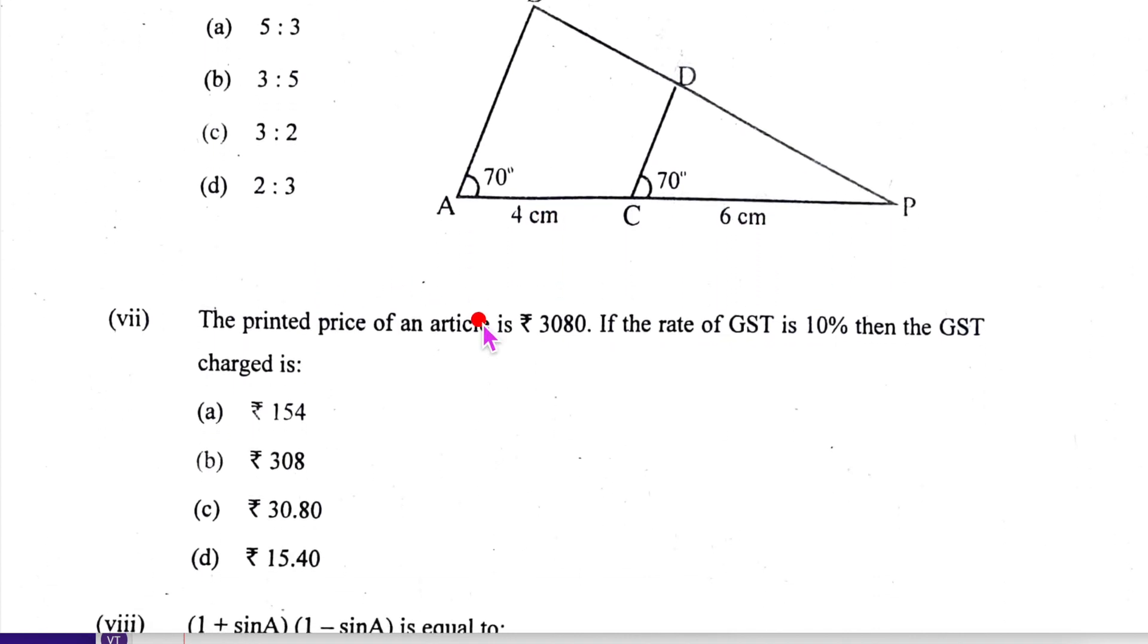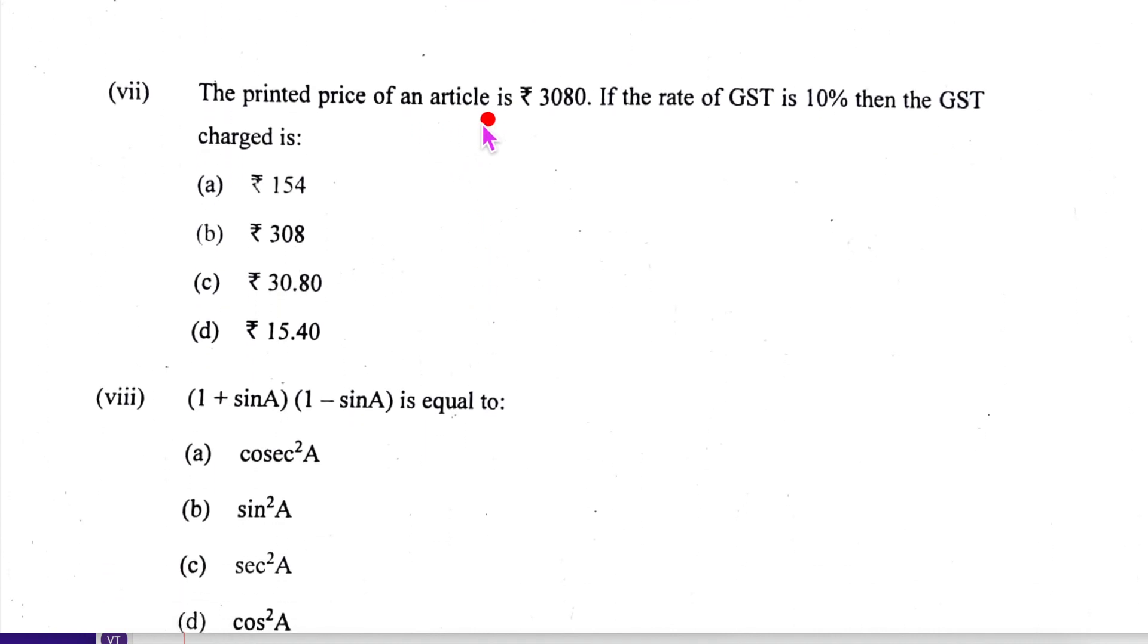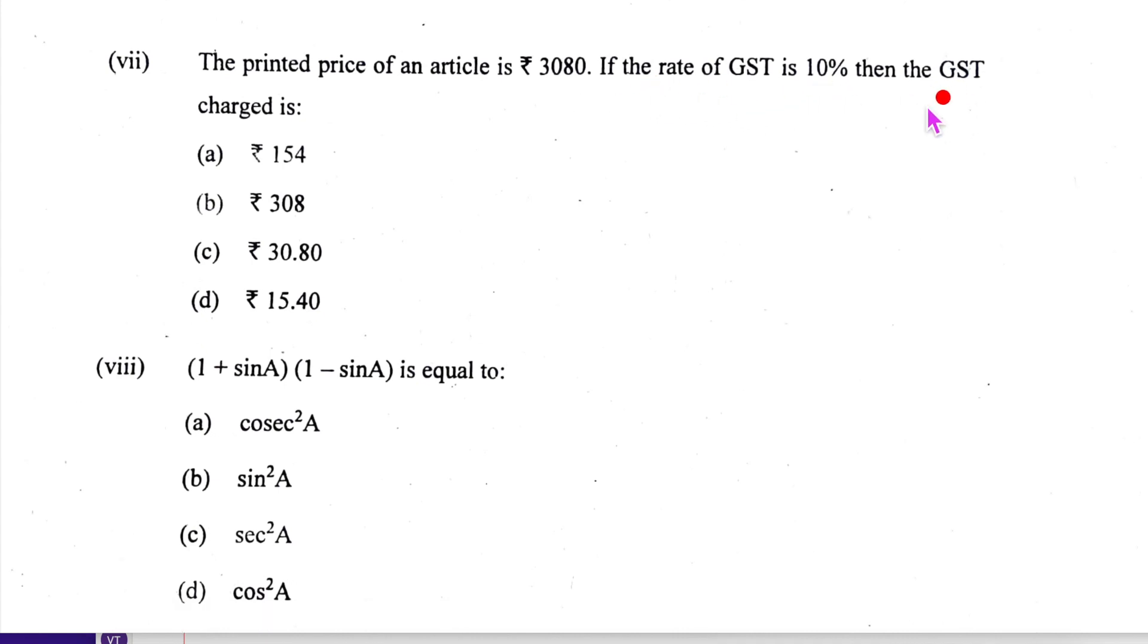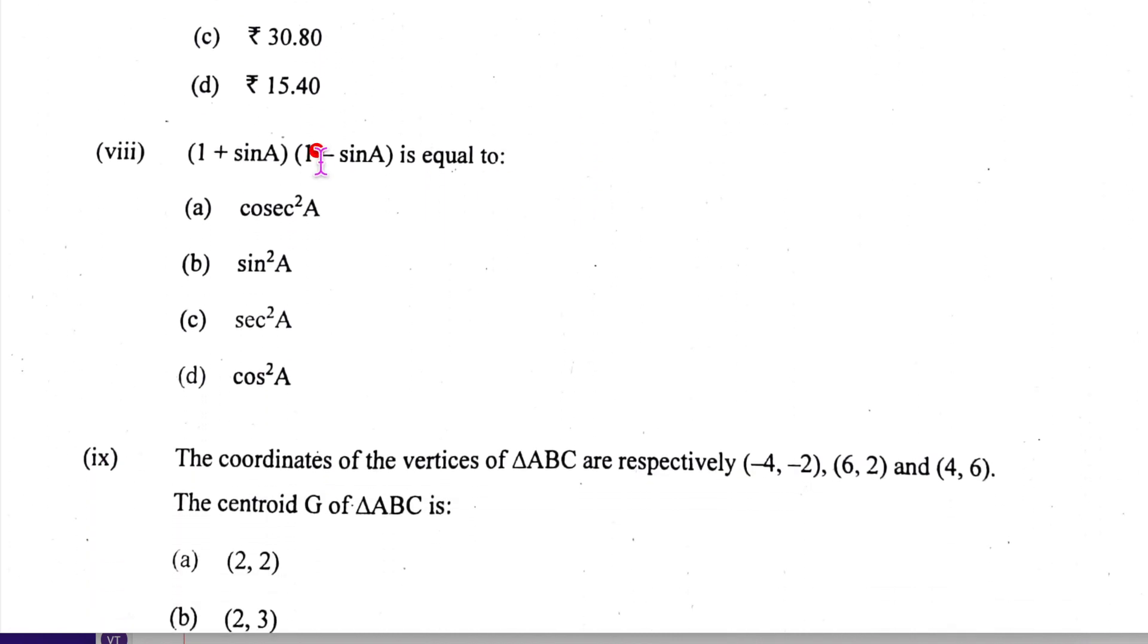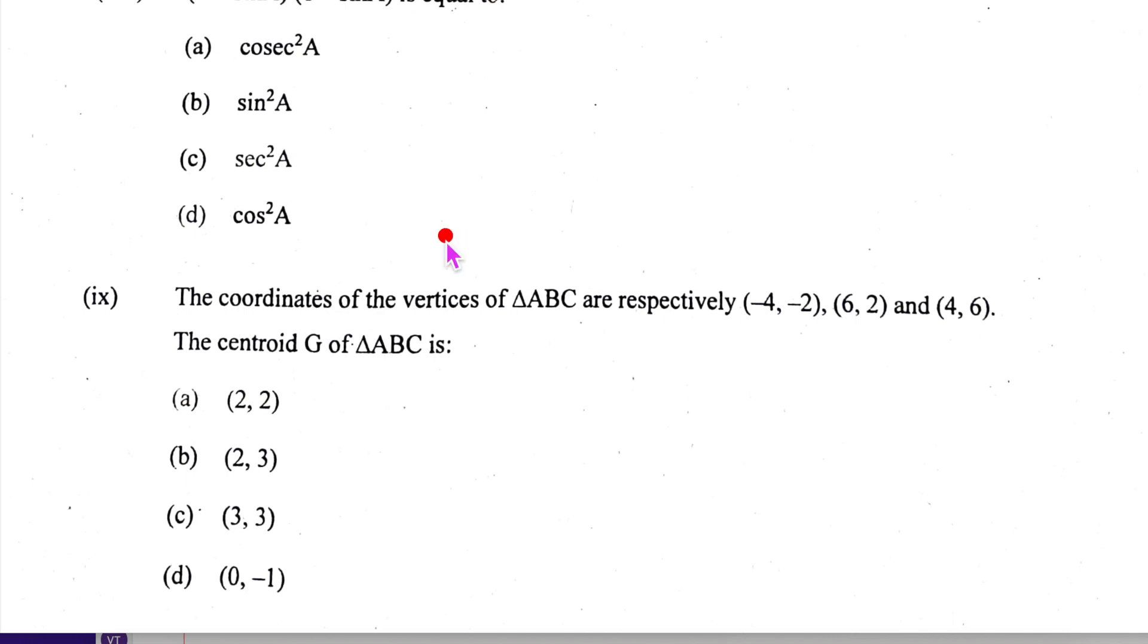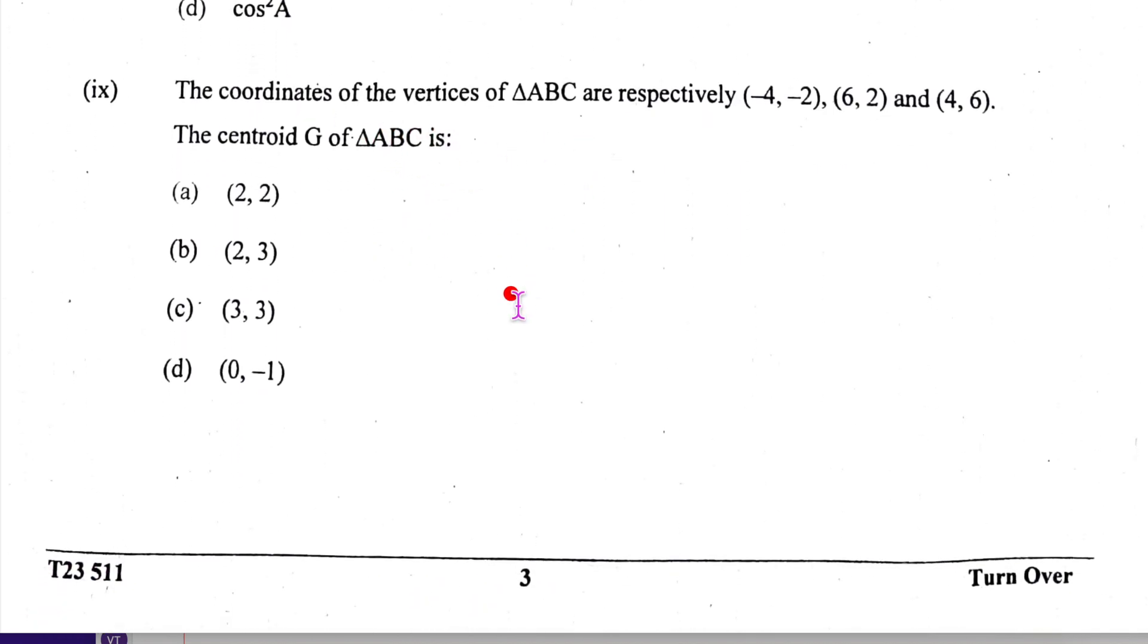Printed price of the article is this, the rate of GST is 10%. The GST charge will be 10% of printed price. That is good enough, simple. This will be 1 minus sine squared a, which is cos squared a. See, we can do this mentally. Now look at the coordinates of the vertices of triangle. The centroid will be x1 plus x2 plus x3 upon 3, y1 plus y2 plus y3 upon 3. It is doable.